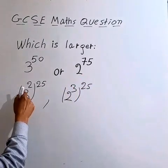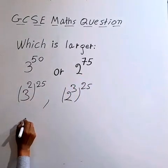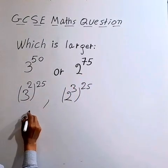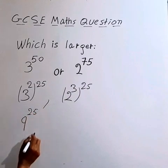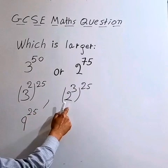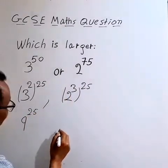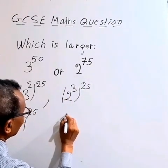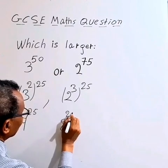So 3 squared is 9, giving us 9 to the power of 25. And 2 to the power of 3 is 8, giving us 8 to the power of 25.